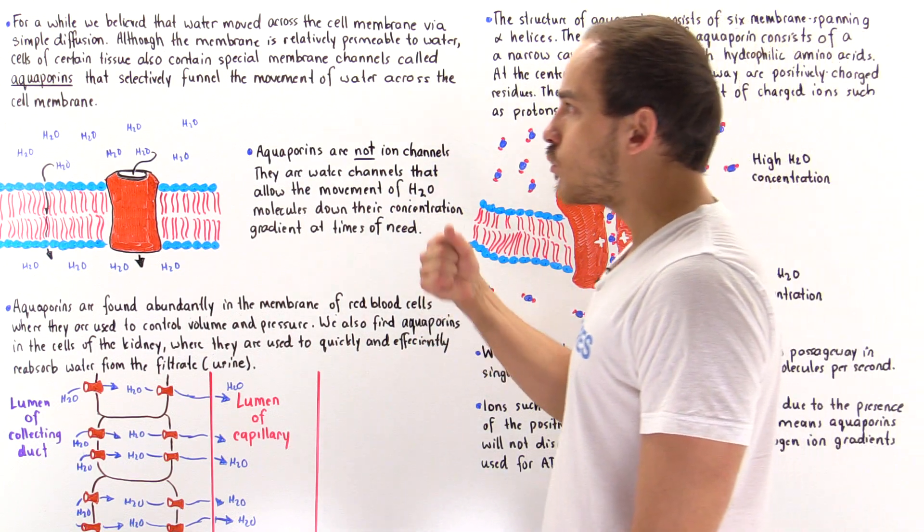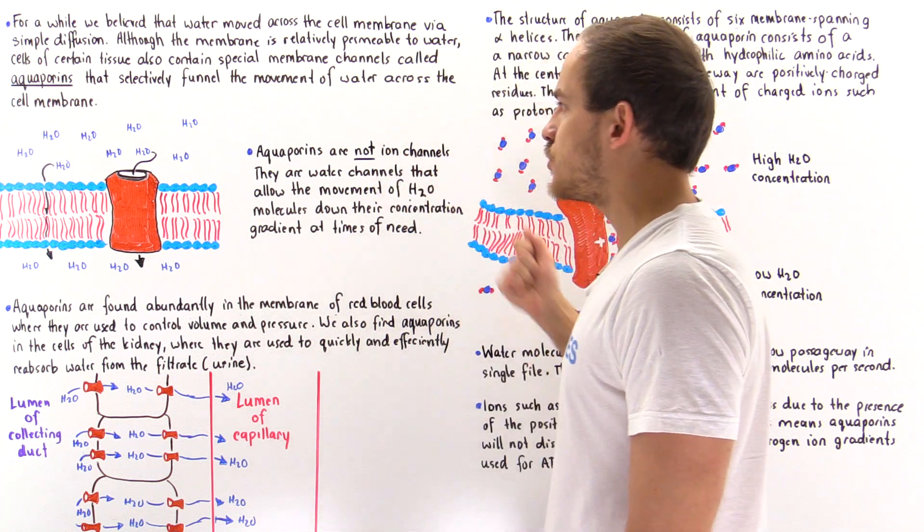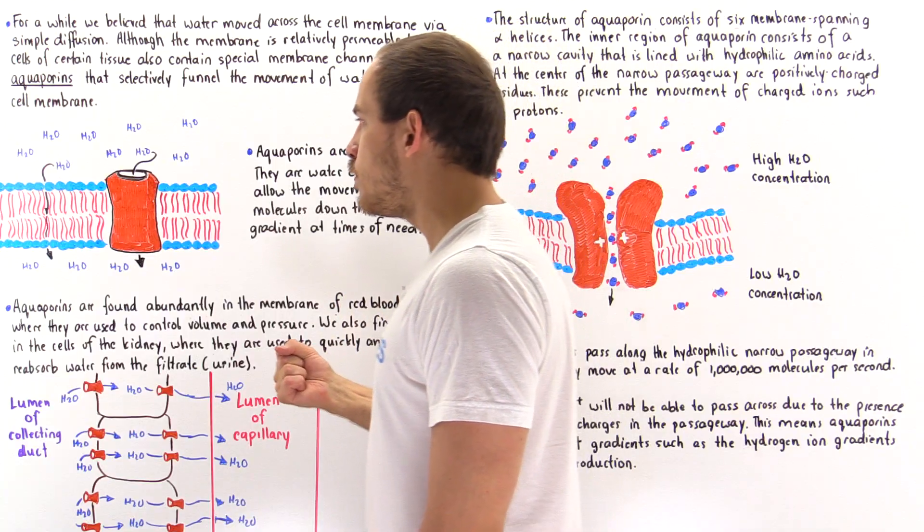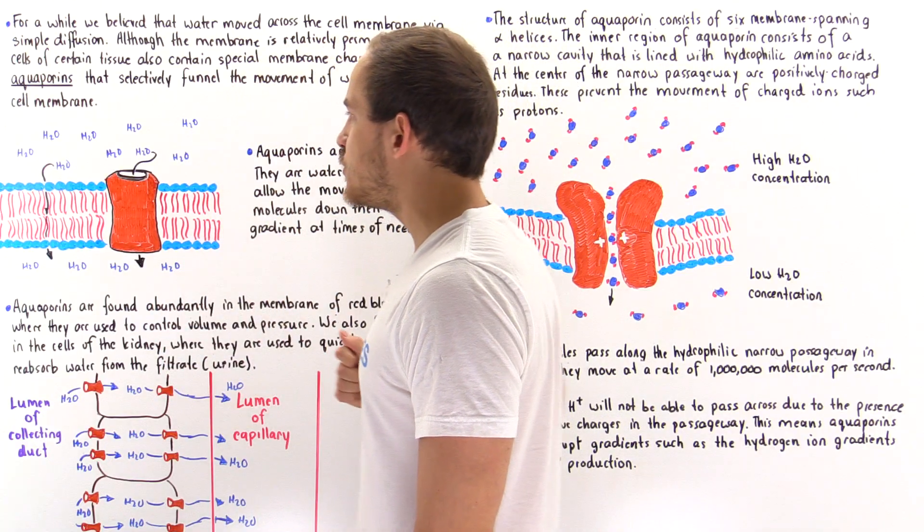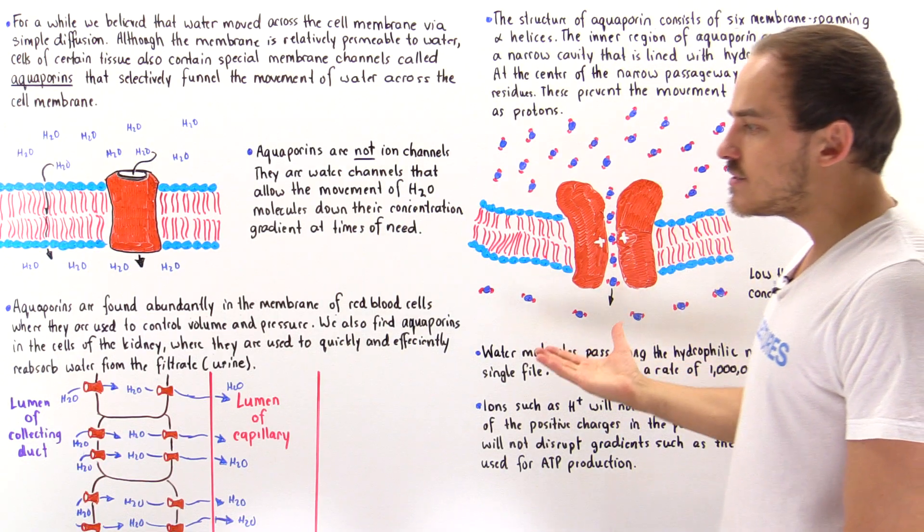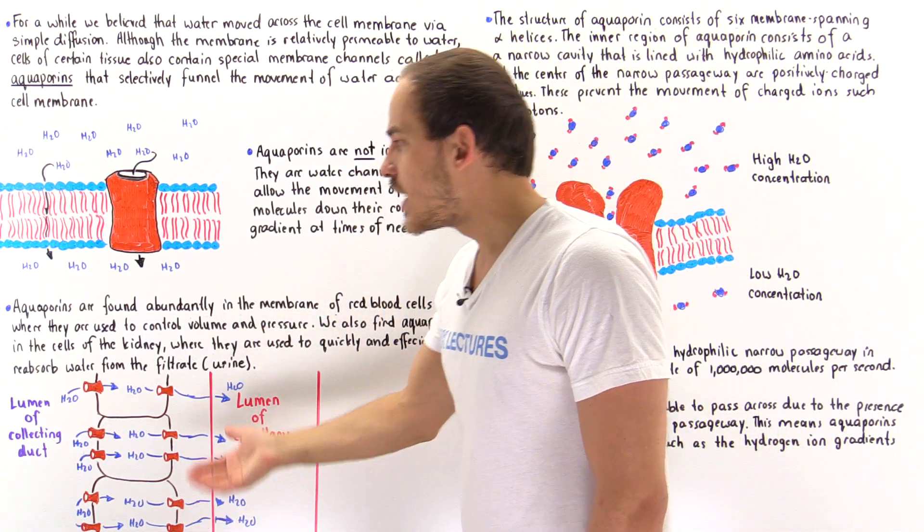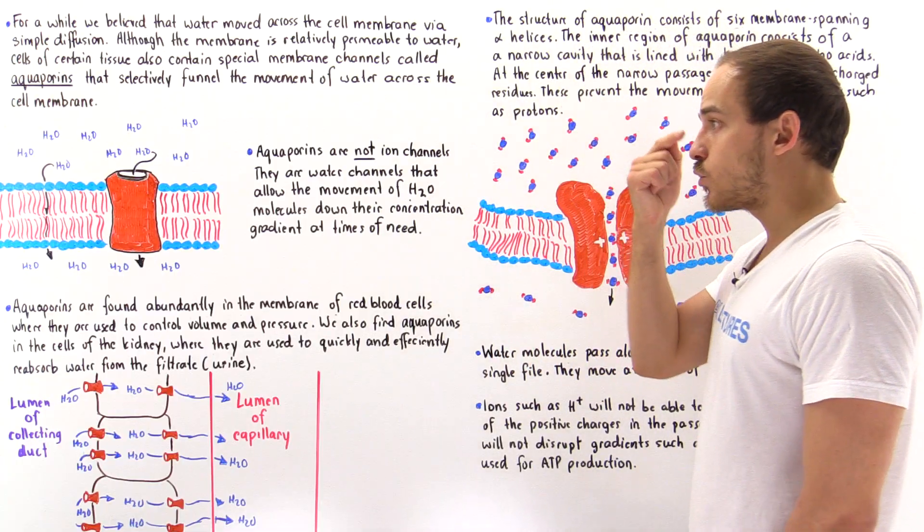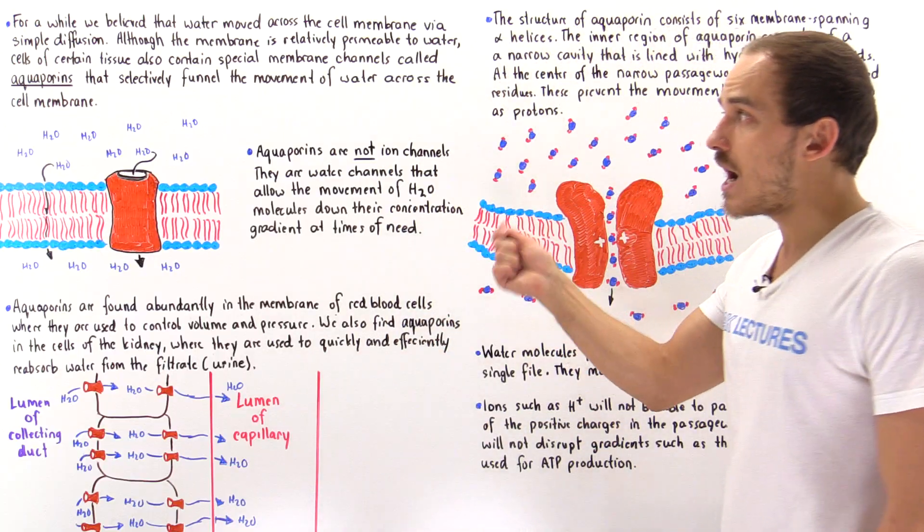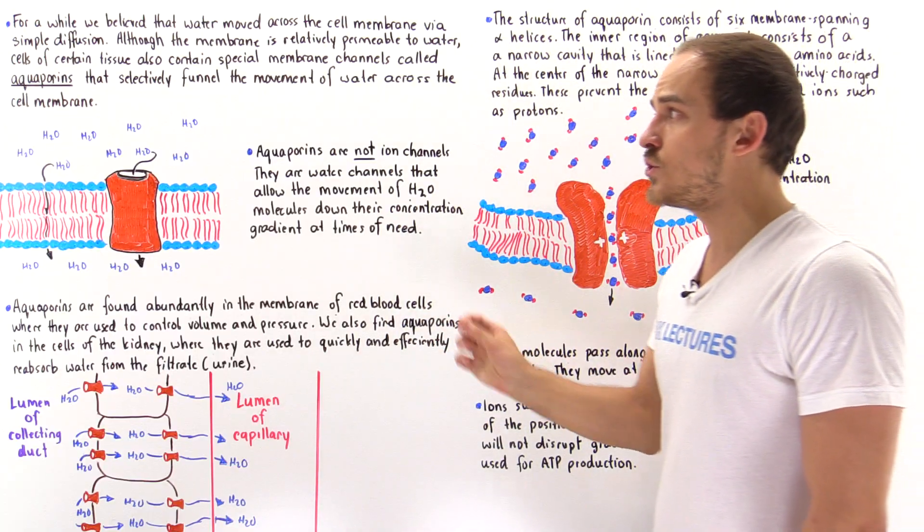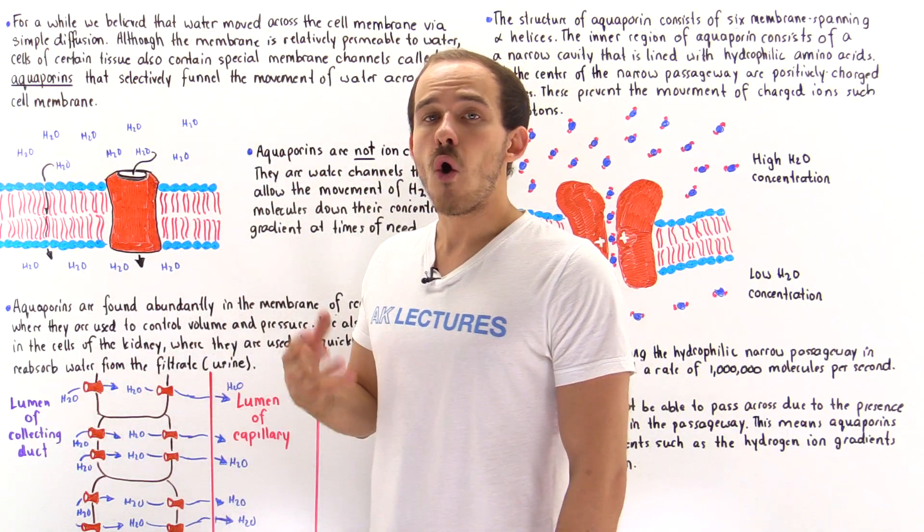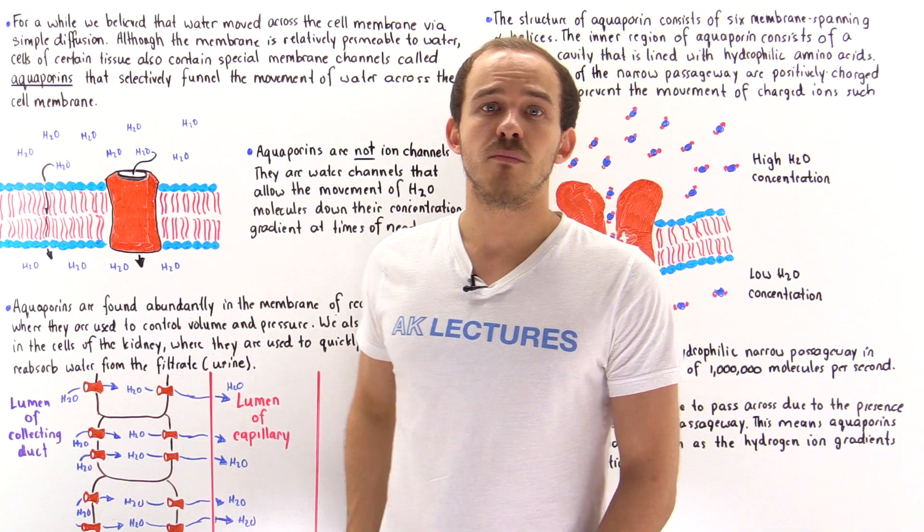We conclude that aquaporins are not ion channels, but they are channels. They are selective channels that allow the movement, the quick movement of these water molecules across the cell when the time arises, for instance in red blood cells, in the cells that create the tears and the saliva, in the cells of the kidneys and so forth. These aquaporins are not exclusive to eukaryotic cells. Many prokaryotic cells, such as bacterial cells, also express and use aquaporins.